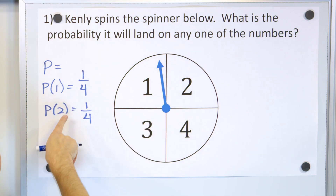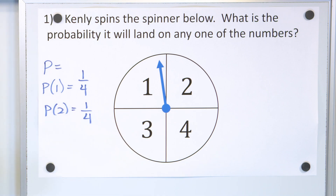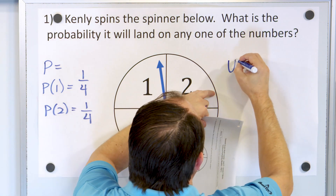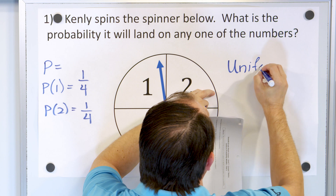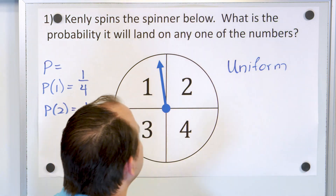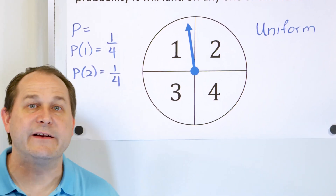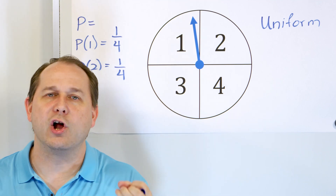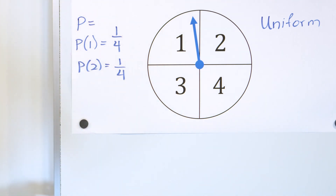So the probability of any one of these outcomes is exactly the same. Because of that, this is called a uniform probability model. It's in the same family as flipping a coin or rolling a die, because all of the outcomes have exactly the same probability, which in this case is one-fourth.